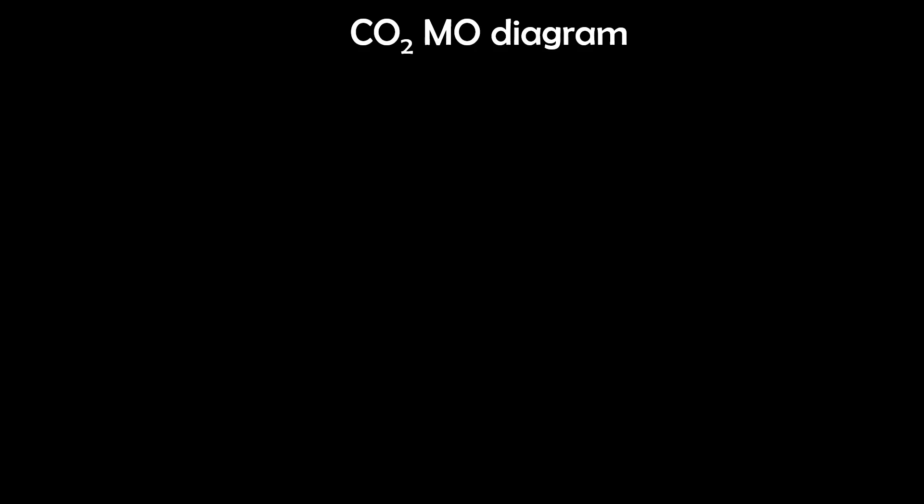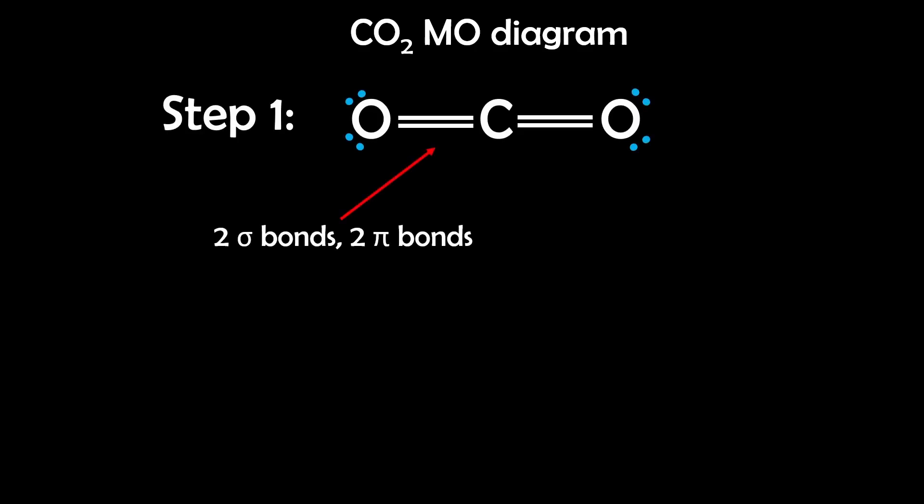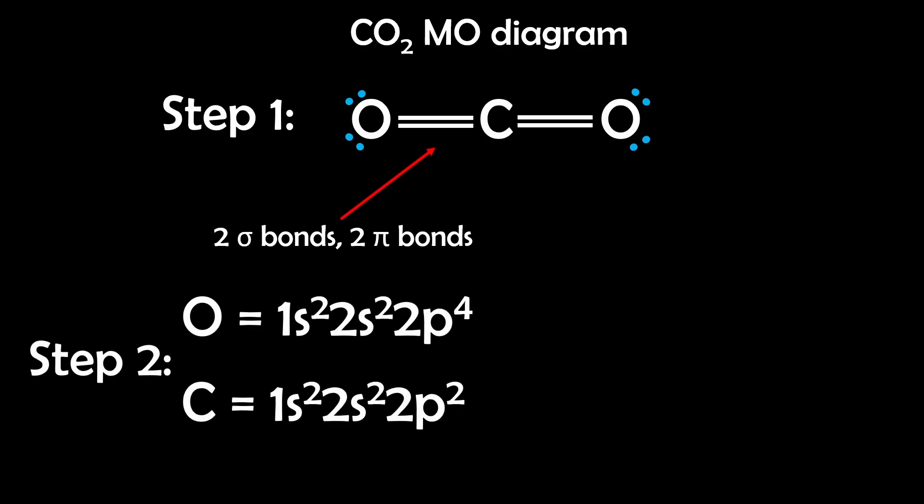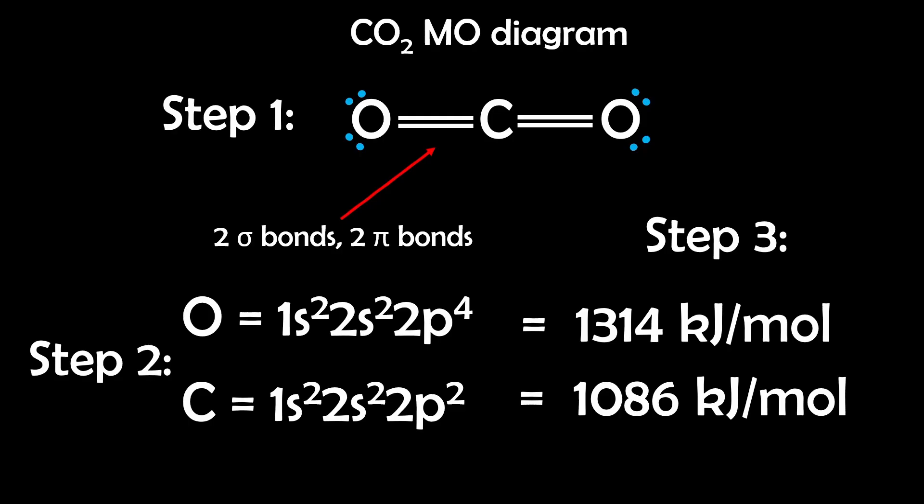Let's look at carbon dioxide as our next example. Step 1: Draw the Lewis structure — CO₂ is a linear structure showing two sigma bonds and two pi bonds between the carbon and oxygen atoms. Step 2: Electron configuration. Carbon is 1s², 2s², 2p², oxygen is 1s², 2s², 2p⁴, so we'll work with the 2s and 2p orbitals from both. Step 3: Compare orbital energies. Carbon and oxygen are different elements, so we use ionization energies — oxygen is about 1,314 kJ/mol and carbon is about 1,086 kJ/mol, telling us that carbon's orbitals are higher in energy than oxygen's.